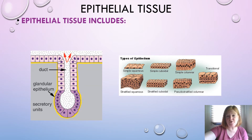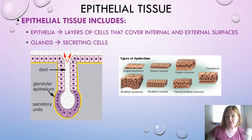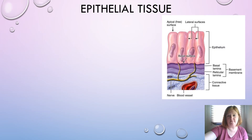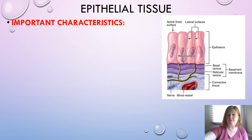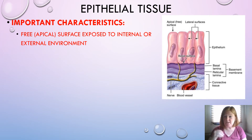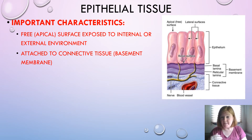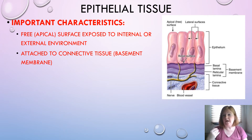First up, we have epithelial tissue. Epithelial tissue includes the epithelia — the layers of cells that cover internal and external surfaces, like our skin, but also the lining around organs and body cavities. It also includes glands or secreting cells. It has a free apical surface exposed to the internal or external environment, and it's attached to a basement membrane made of connective tissue — that's the bottom layer, the deepest layer.